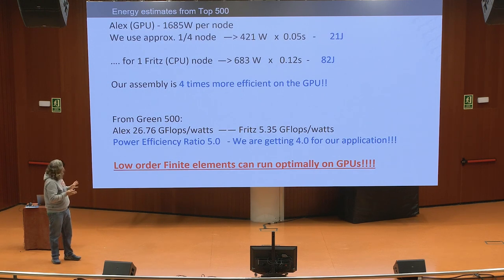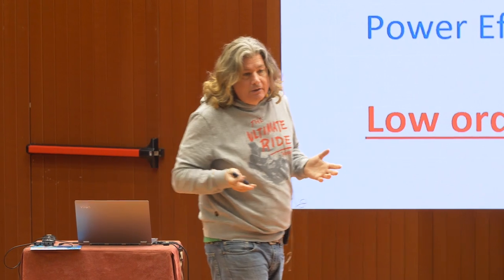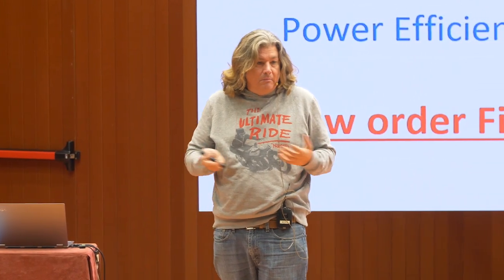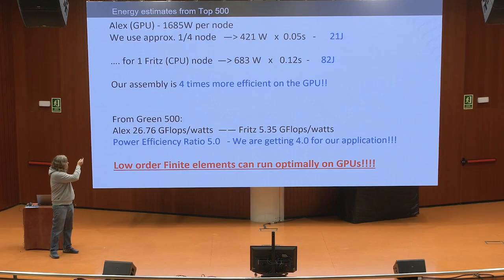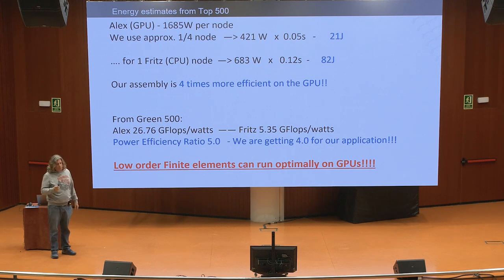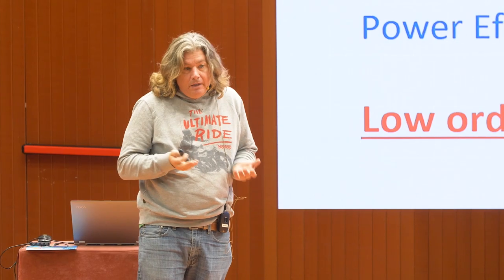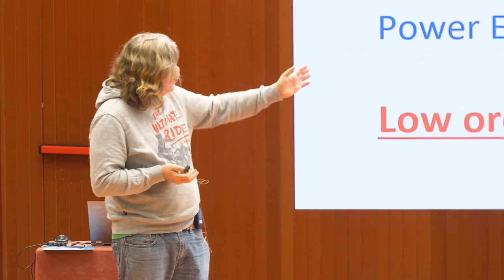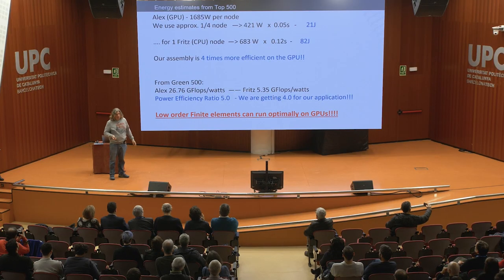From this, I did some energy estimates, because I understand that exascale is all about energy — being able to run things but using much less energy. We have the power consumption from the Top500 list, and we can know exactly how much each node consumes. We can do the math and see that we can run the same simulation in 21 Joules on the GPU against 82 Joules on the CPU — we are four times more efficient on the GPU. This is very important, and this number is very close to the power efficiency ratio that one can see in the Green500 list.